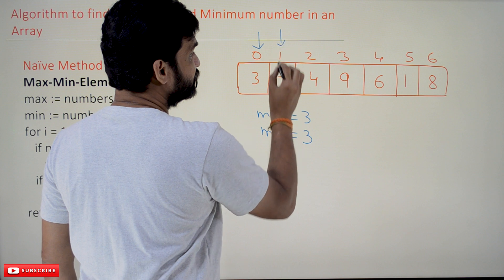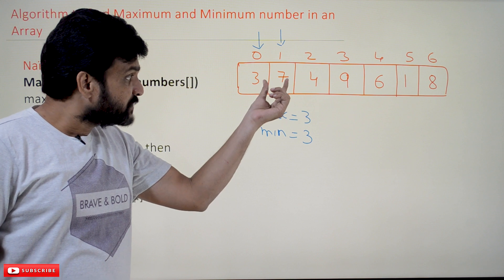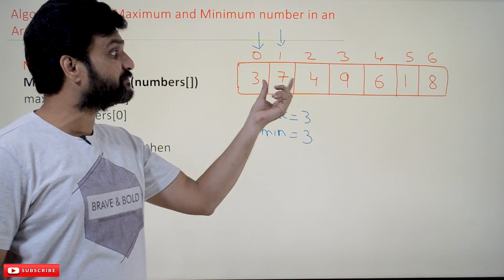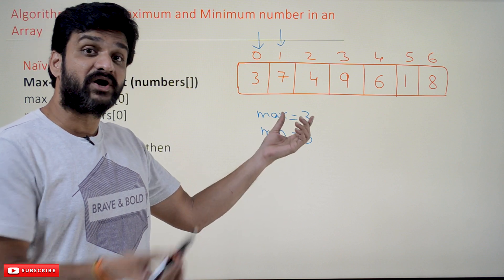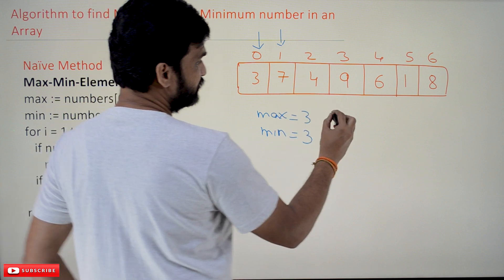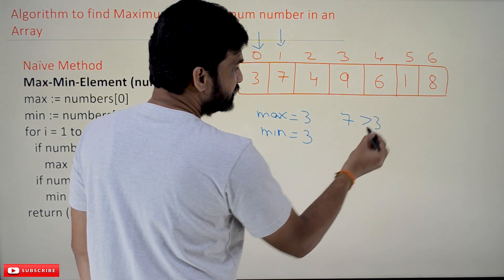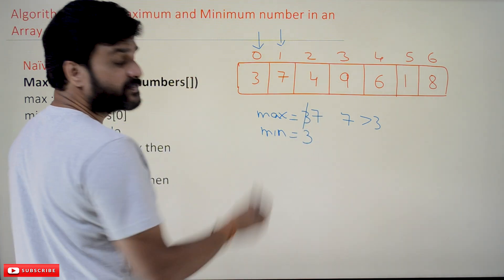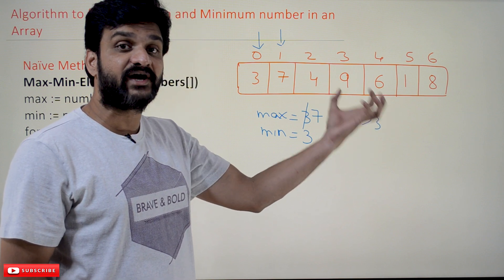Next, we start from the first element and iterate until the end of the array. Each time we compare the current element with the existing max element, and also compare it with the existing min element. Whichever condition is true, the corresponding value gets updated. So the first element is 7. Is 7 greater than 3? Yes, it is true. So the max element is updated with 7.